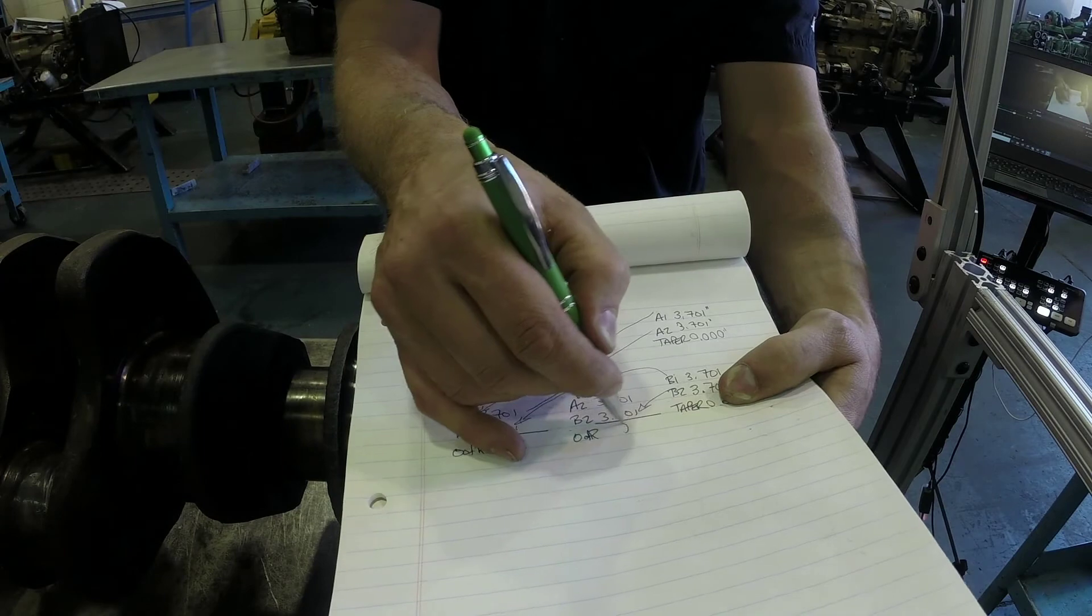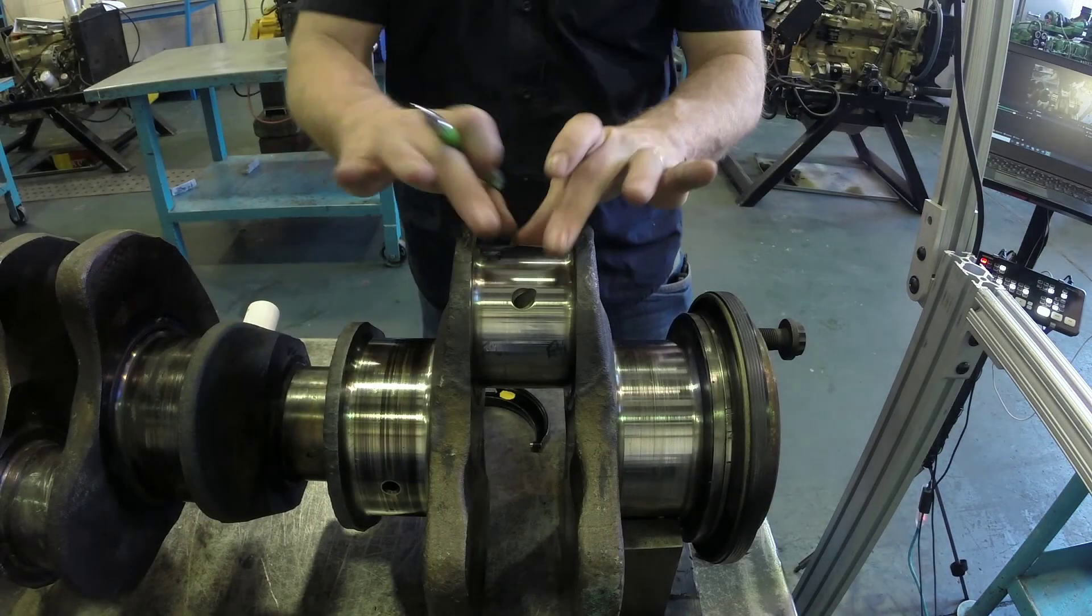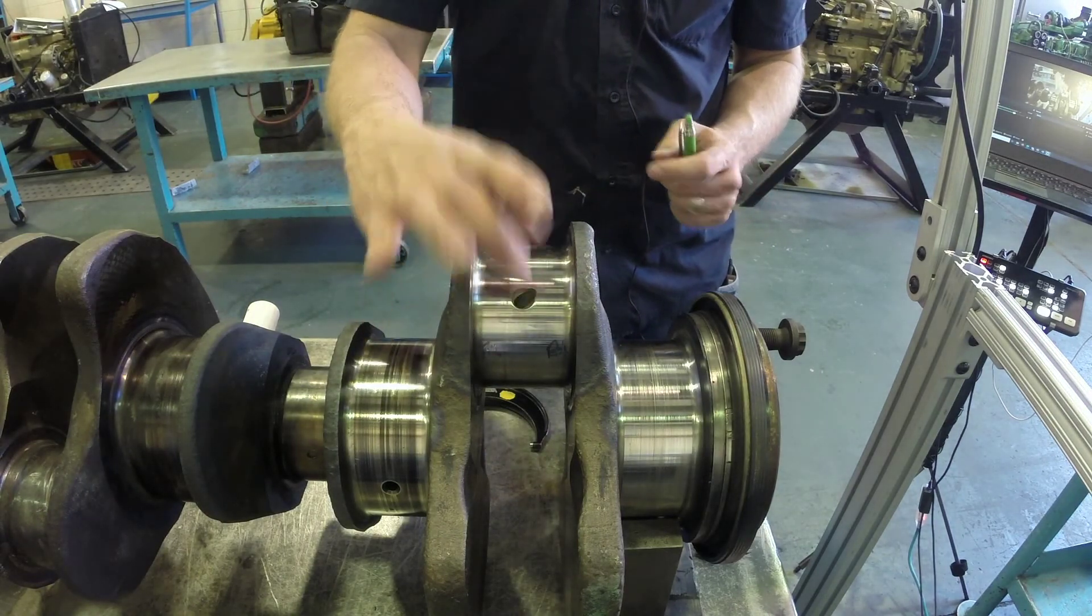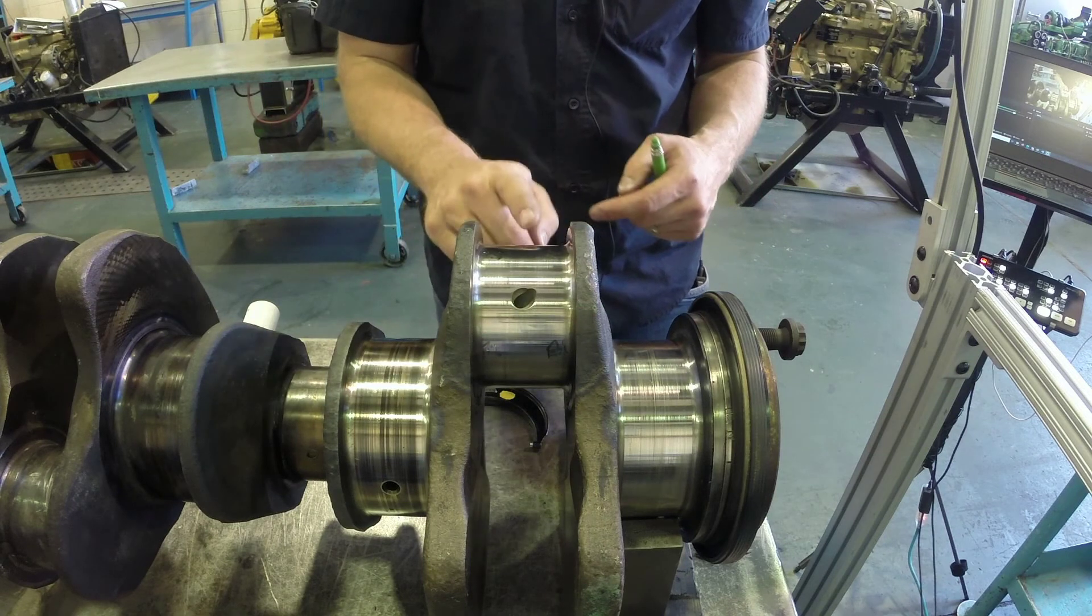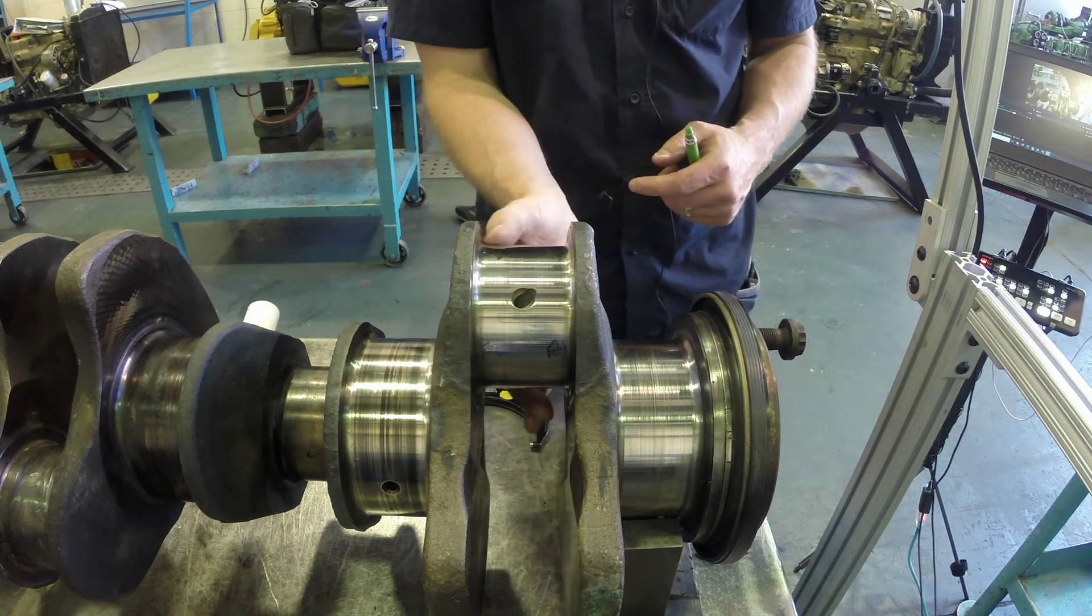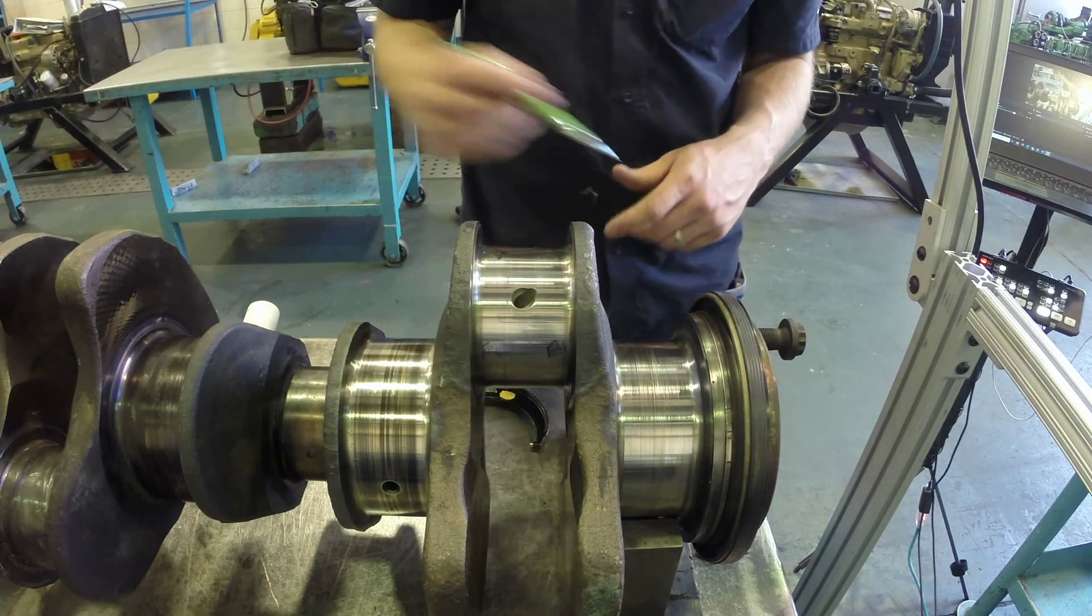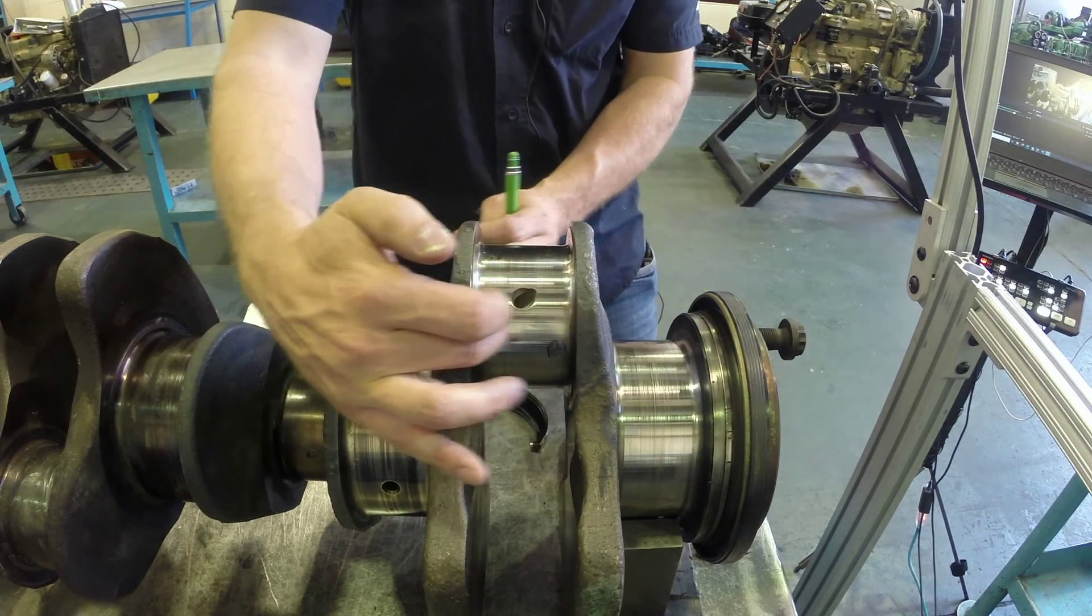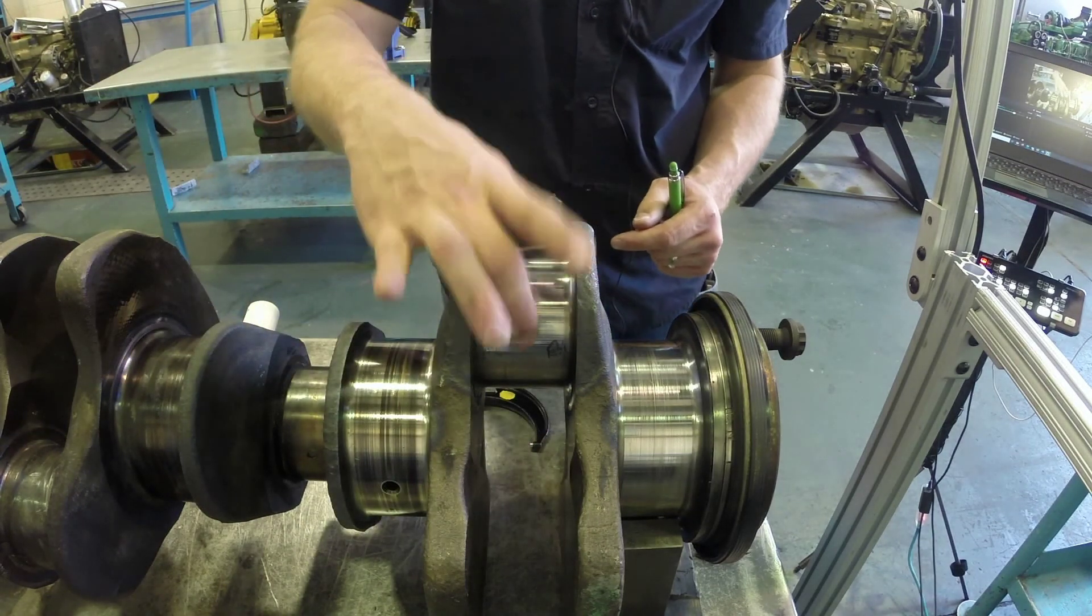What that tells us is that this connecting rod journal is both perfectly round still, as well as perfectly parallel, or there is zero taper. So that means this would be in excellent condition. Now the rest of this crankshaft has its own issues—you can sort of see them on the edge here, this discoloration—but this journal in particular, this connecting rod journal, would be perfectly reusable.